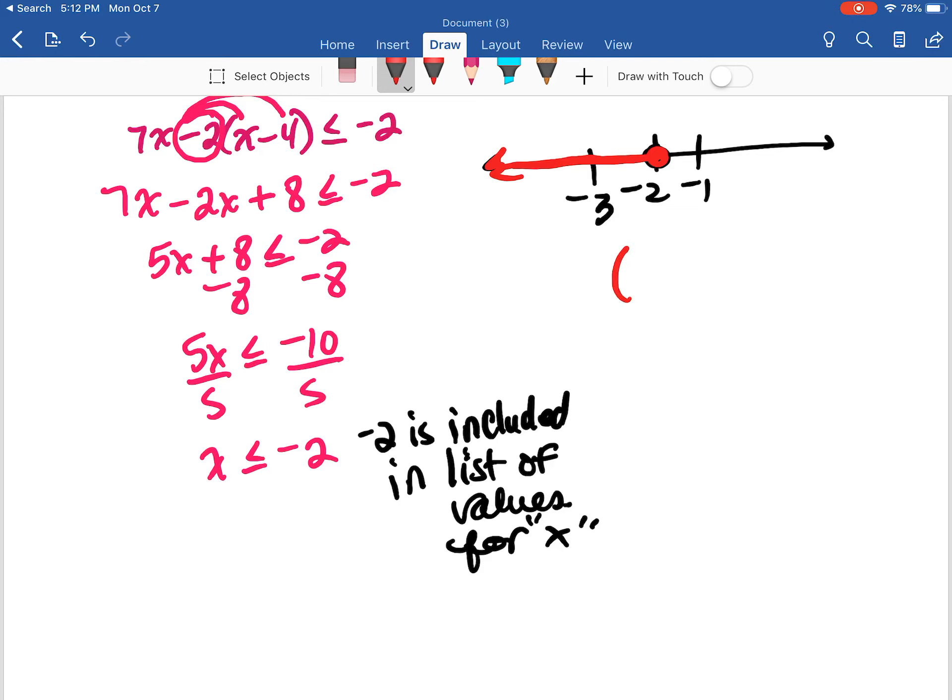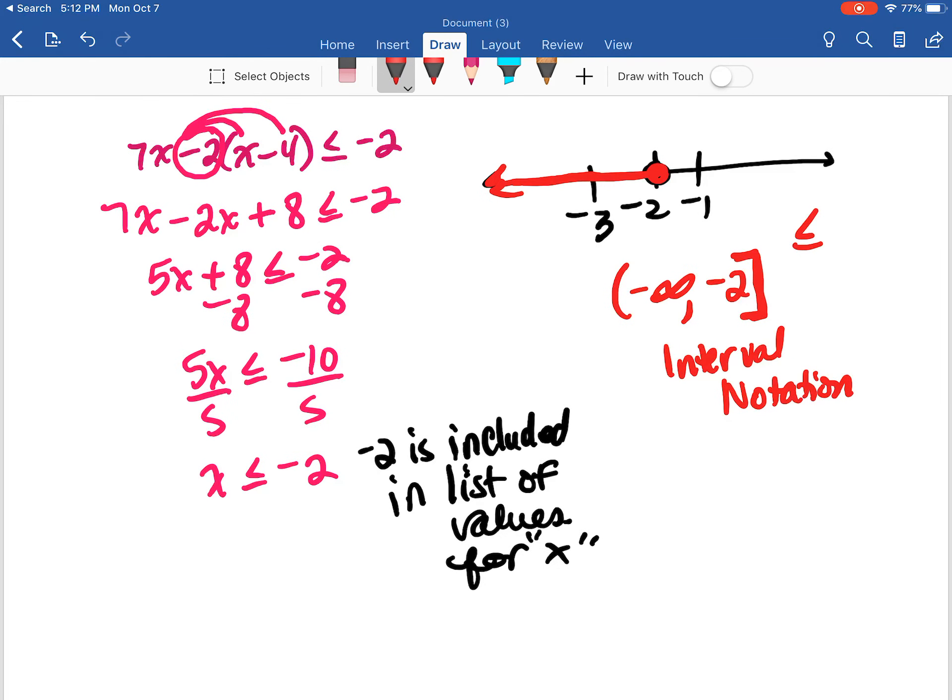So I'm going to write my interval notation. This is going to be negative infinity to negative 2. Since negative 2 is included, we're going to use our bracket symbol. So this would be the interval notation when we're including, when our symbol is less than or equal to or greater than or equal to.